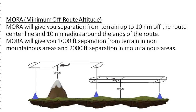Minimum Off-Route Altitude will give you separation from terrain up to 10 nautical miles of the route center line and 10 nautical mile radius around the ends of the route. Minimum Off-Route Altitude will give you 1,000 feet separation from terrain in non-mountainous areas and 2,000 feet separation in mountainous areas.